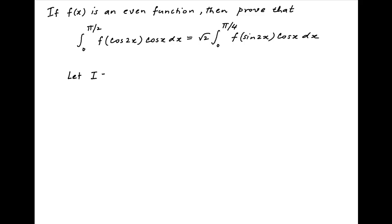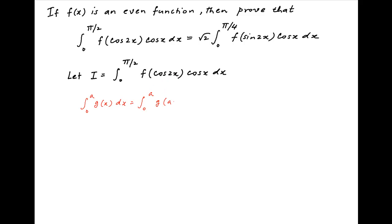Let's denote the left hand side integral 0 to pi upon 2 f(cos2x)·cos(x)dx by I. Now recall a property of definite integrals that integral 0 to a of g(x)dx is equal to integral 0 to a of g(a minus x)dx. Using this result, I is equal to integral 0 to pi upon 2, replacing x with pi upon 2 minus x.